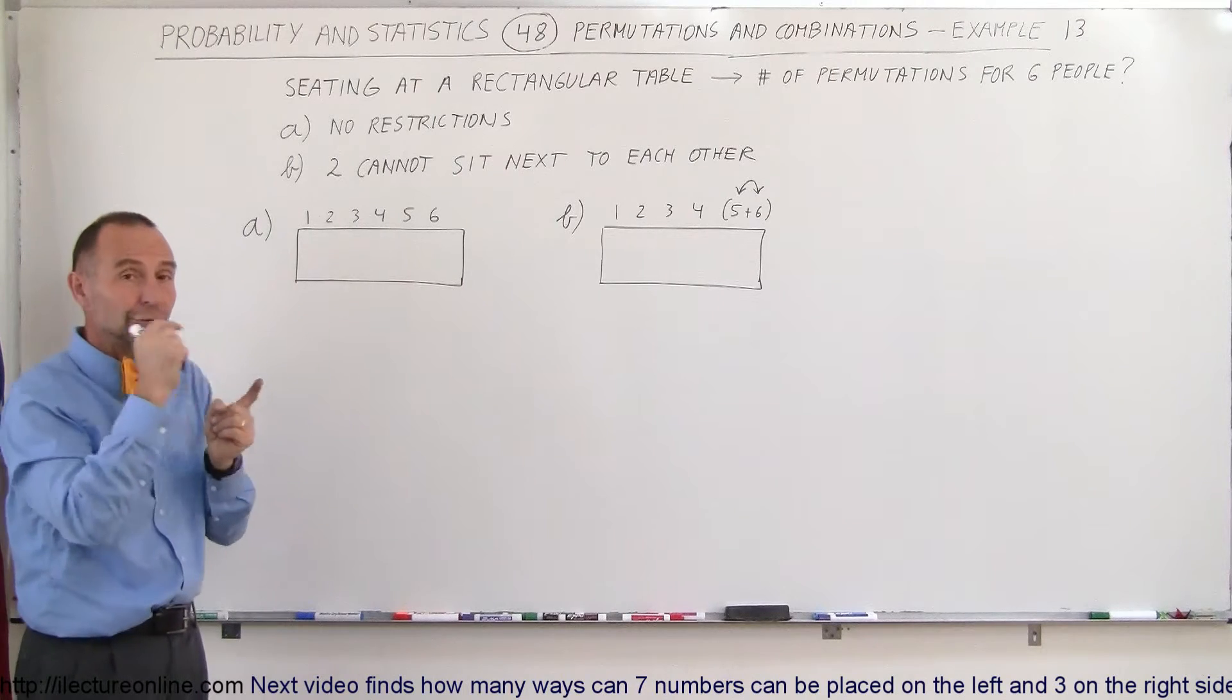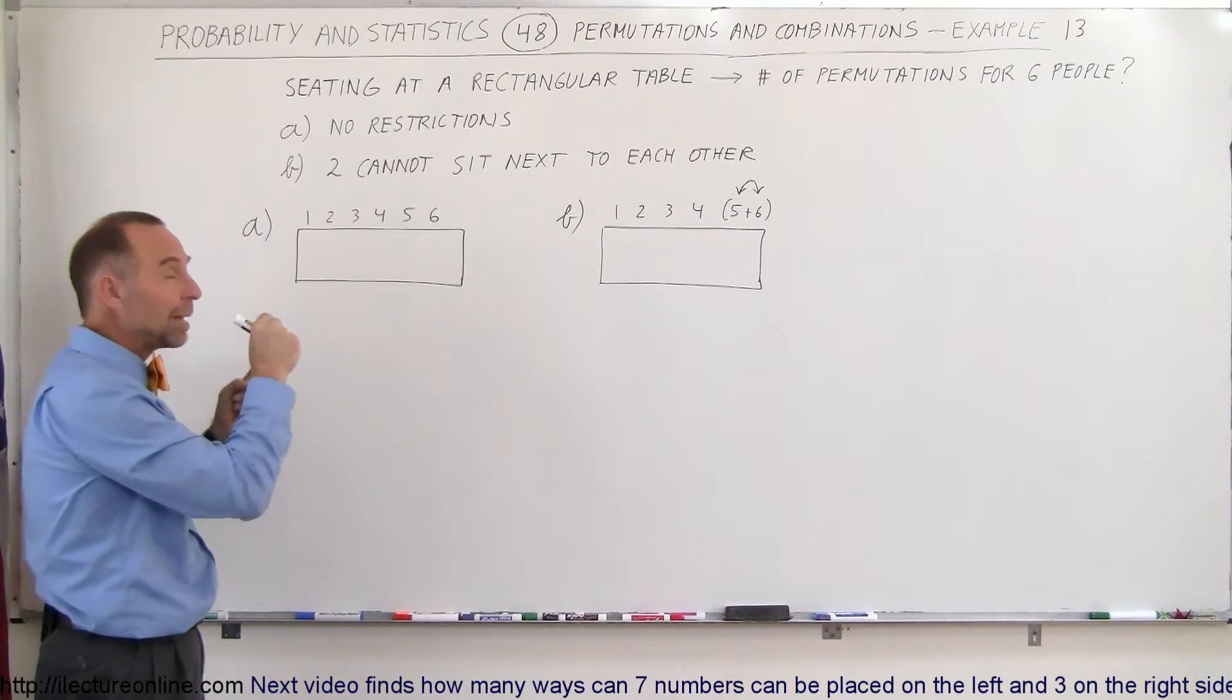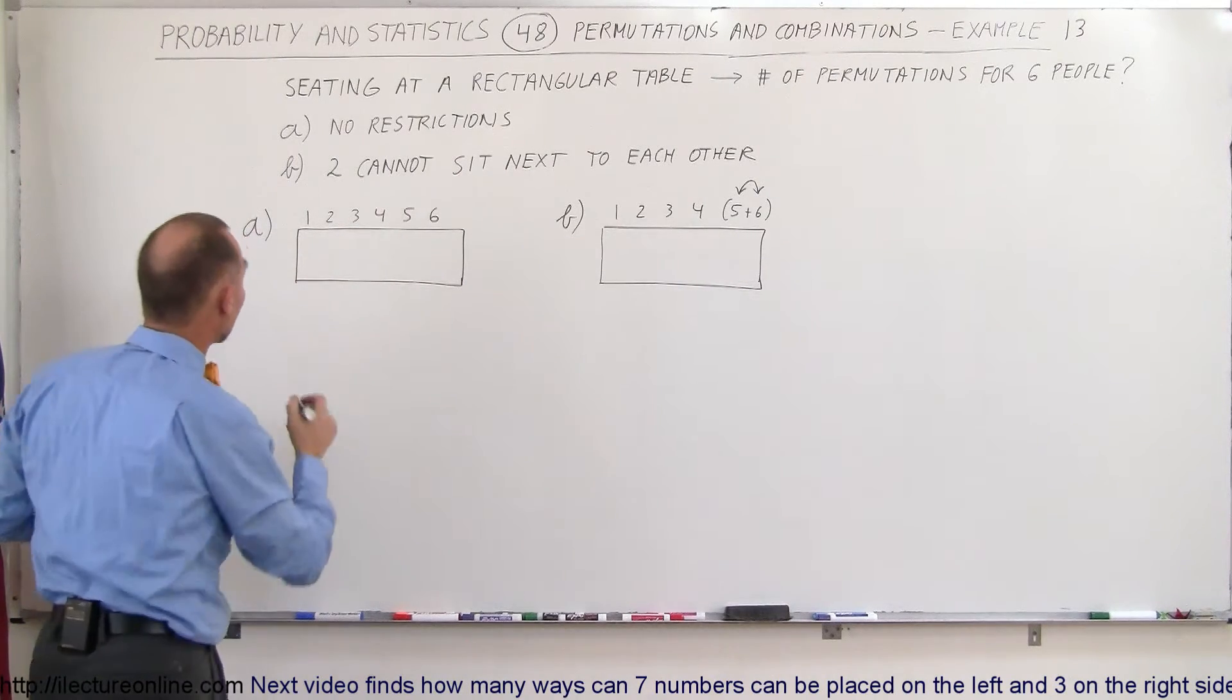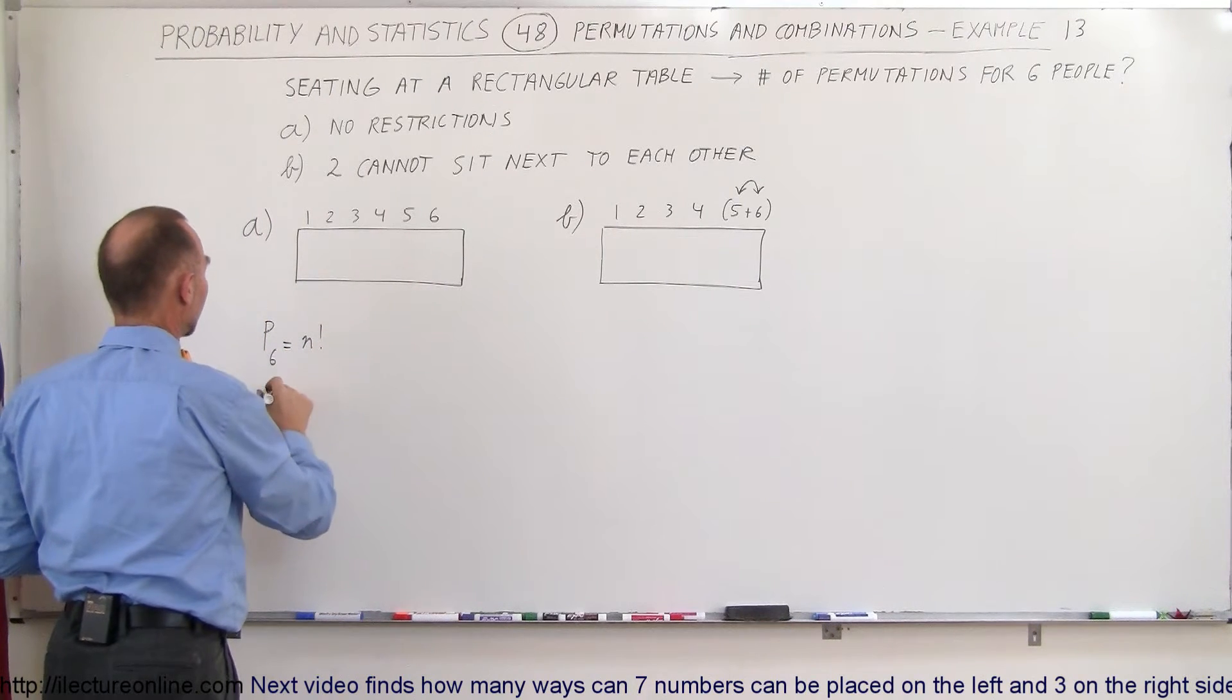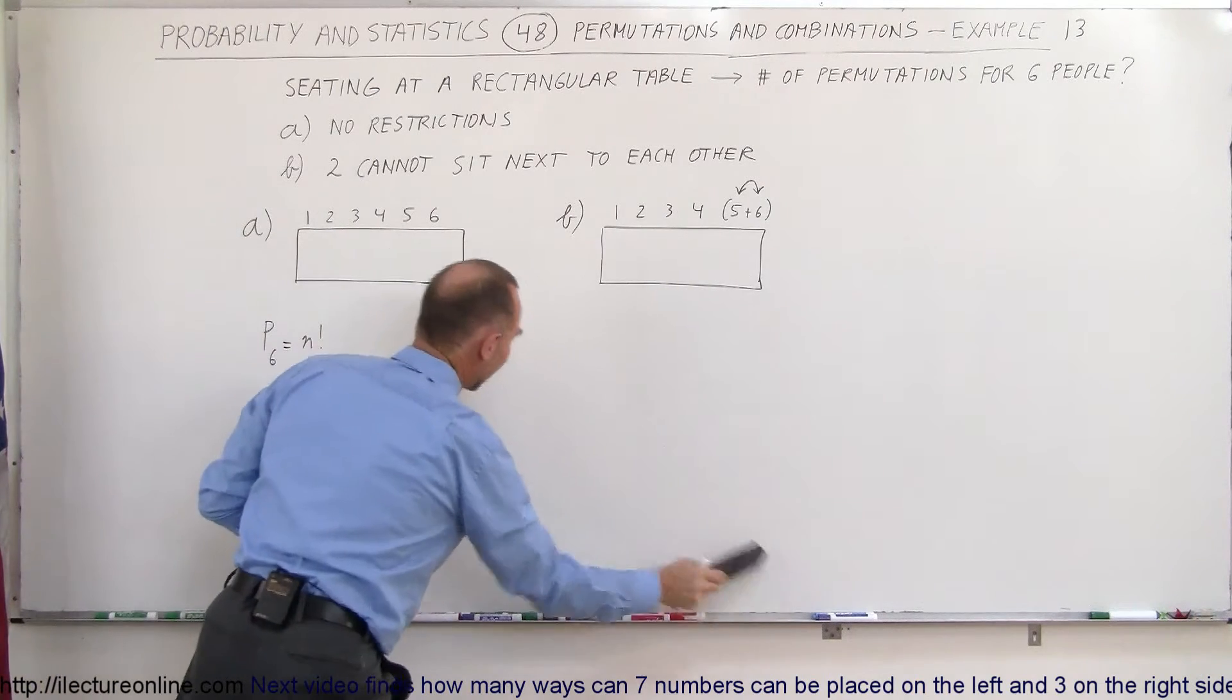For a round table, the number of permutations was n minus 1. For a rectangular table where the first person sitting down does make a difference, the number of permutations for six people is equal to n factorial.